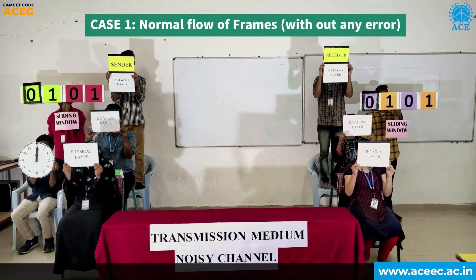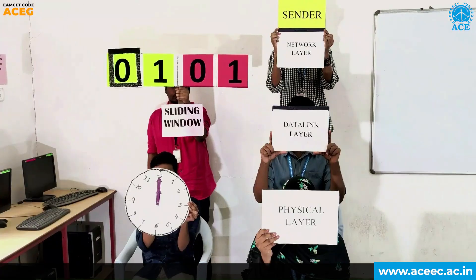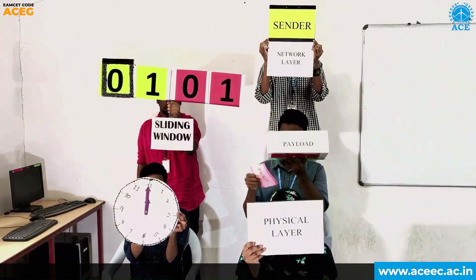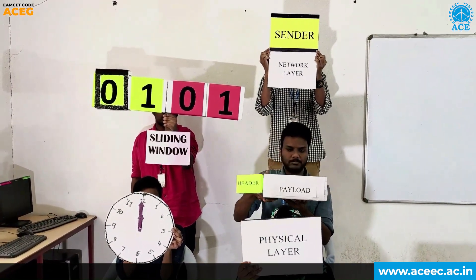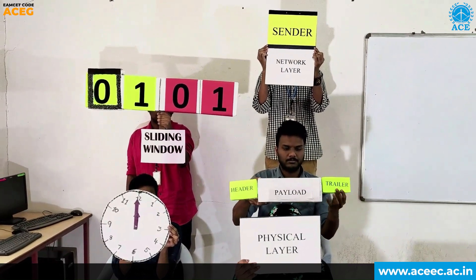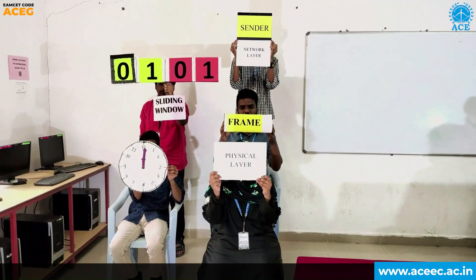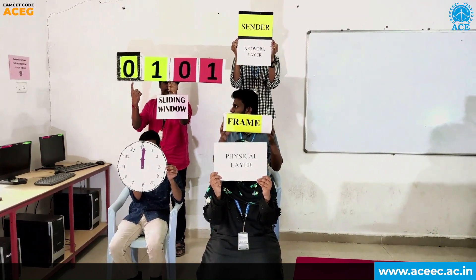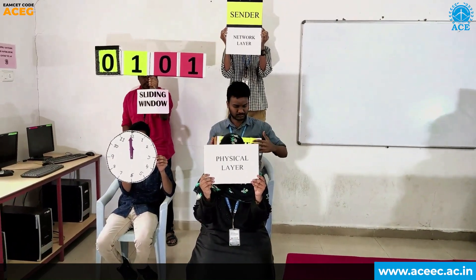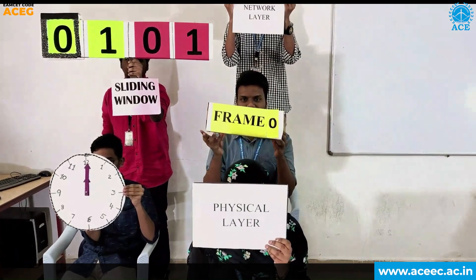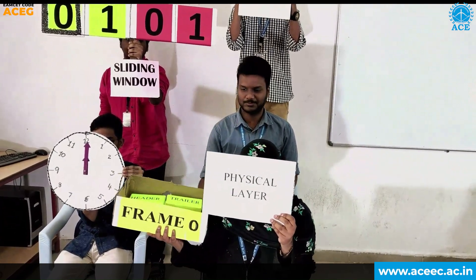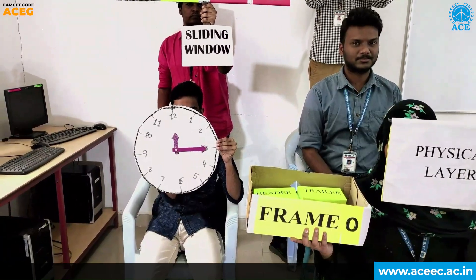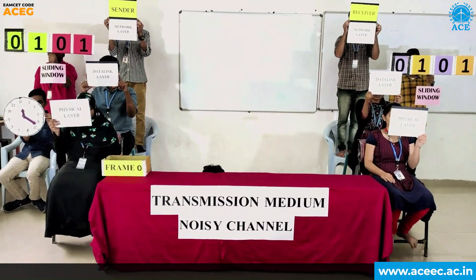Case 1: Normal flow of frames from sender to receiver without any errors. The sender network layer hands over a packet to the data link layer. The data link layer encapsulates the packet into a frame, adds a header and trailer. The sending data link layer gives sequence number 0 to the frame, since the sliding window indicates sequence number 0. The frame is handed over to the physical layer, the timer is started, and the sender waits for acknowledgement. The physical layer transmits frame 0 to the receiver through the noisy channel.